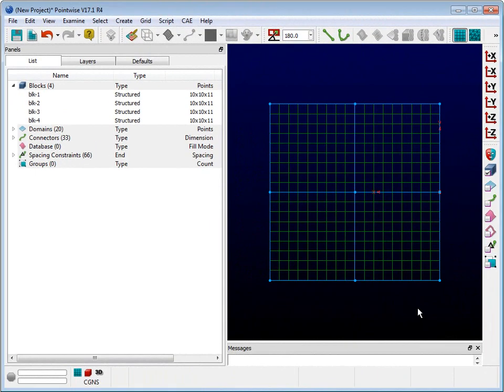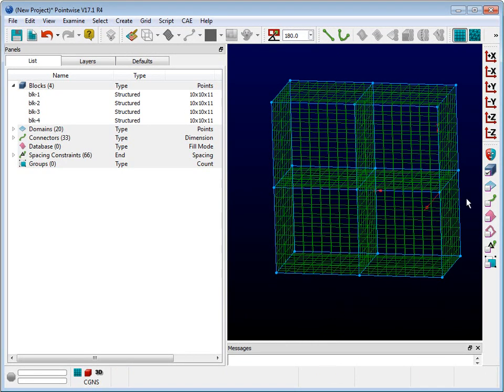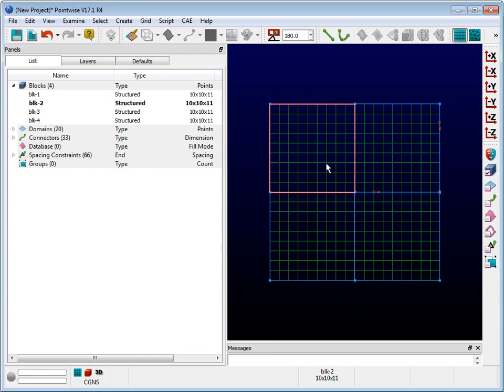Take a look at this group of four structured blocks. It looks two-dimensional, but as I rotate the view, you can see that it is truly three-dimensional. These blocks look pretty good, right? Nothing out of the ordinary. However, it is very possible that your CFD solver would not accept the output from these blocks, because one of them has a left-hand orientation.